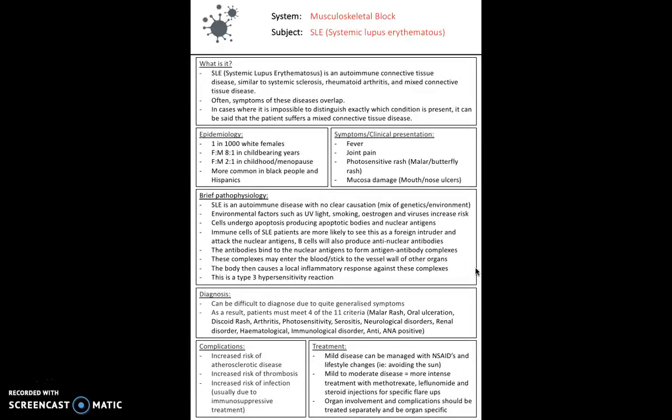Next we have SLE, or systemic lupus erythematosus. This is an autoimmune condition of the connective tissue, similar to systemic sclerosis which we'll talk about next. It's also similar to rheumatoid arthritis and mixed connective tissue disease in that they're all autoimmune mediated. Often the symptoms of the diseases overlap, and in cases where it's impossible to distinguish between them, we can say the patient is suffering a mixed connective tissue disease. The epidemiology of SLE: it occurs in one in 1,000 white females. The female to male ratio is two to one in childhood and menopause, but eight to one in childbearing years. It's much more common in black people and Hispanics. Symptoms that patients present with include fever, joint pain, a photosensitive rash like a malar or butterfly rash, and mucosal damage such as mouth and nose ulcers.